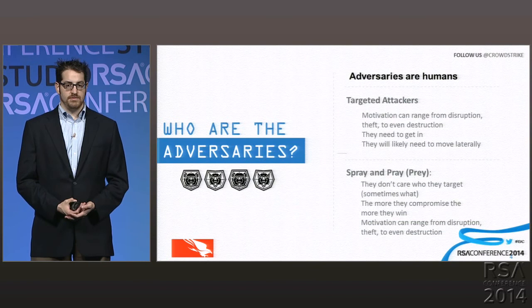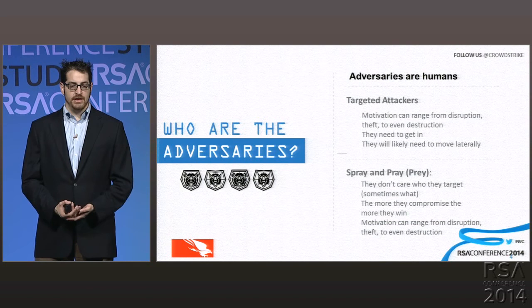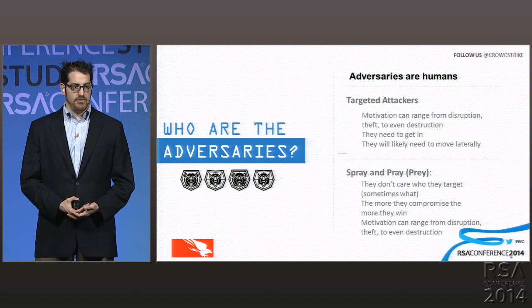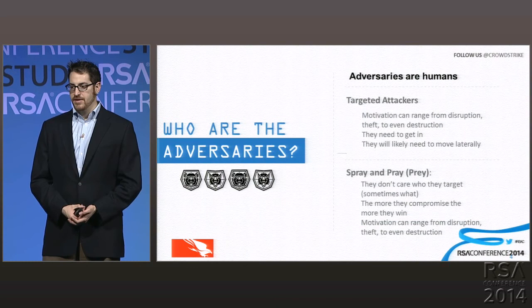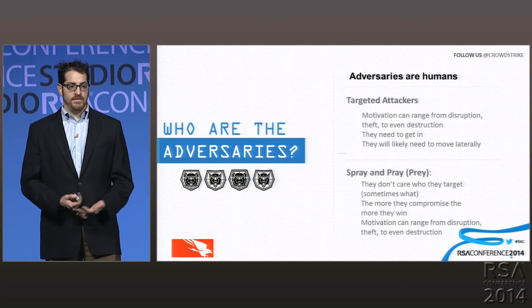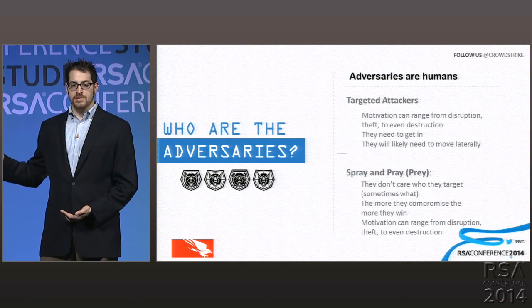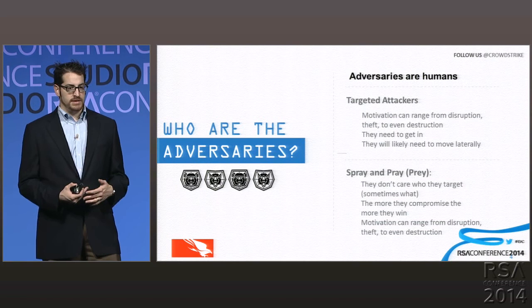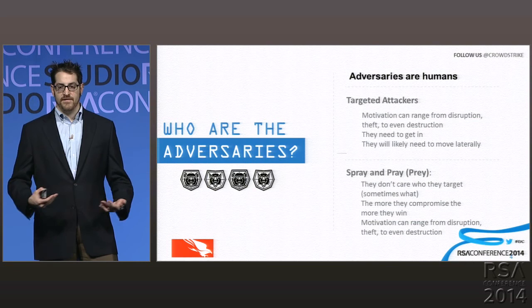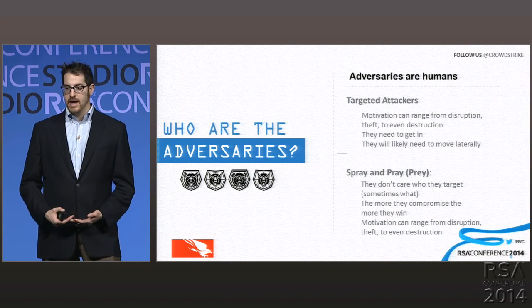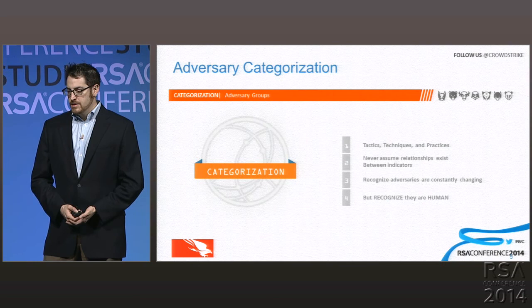Their motivation can vary as well, similar to the targeted attacker. It could be a disruptive attack — they might be engaged in something like a denial of service, or a crypto locker type attack where they encrypt the contents of your system and then try to ransom access to that data back. They might even be trying to steal account credentials or intellectual property. And I see that they're even taking a page from the targeted attack book — what used to be a criminal attack is now manifesting itself with lateral movement, privilege escalation, and a specific target inside the enterprise.